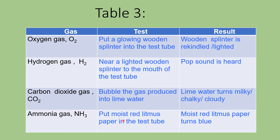Number four is ammonia gas. Put moist red litmus paper into the test tube — the red litmus paper will turn blue. Now let us classify the character of each gas — acidic, alkaline, or neutral. Oxygen is a neutral gas. Hydrogen gas is a neutral gas. Carbon dioxide is an acidic gas. Ammonia turned red litmus paper to blue, so ammonia is an alkaline gas.